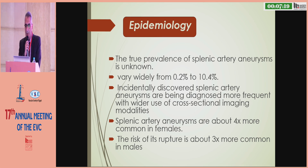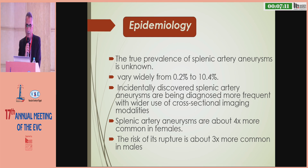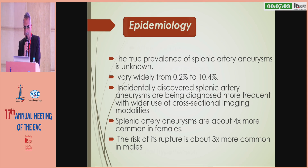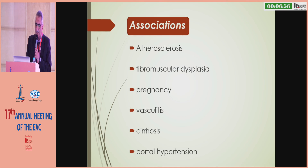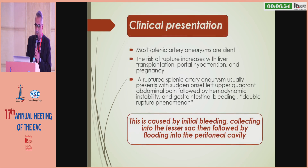Splenic artery aneurysms are being diagnosed more frequently with the wide use of cross-sectional imaging. They are about four times more common in females, while the risk of rupture is three times more common in men. Associated diseases include atherosclerosis, fibromuscular dysplasia, pregnancy, vasculitis, cirrhosis, and portal hypertension.